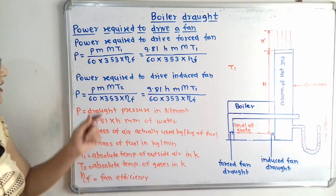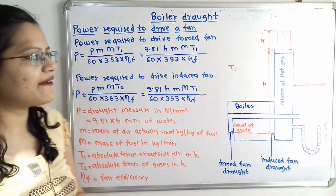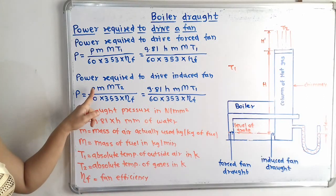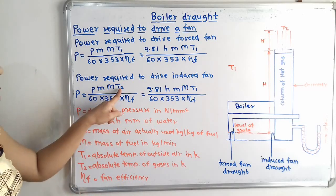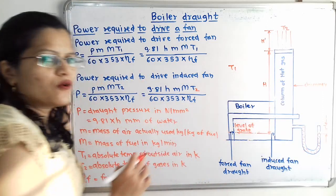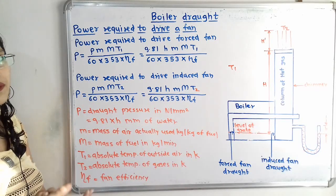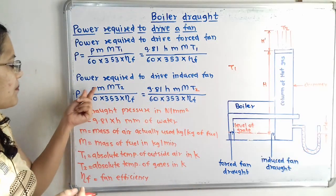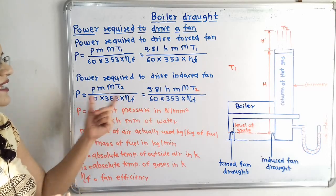For the power required to drive an induced draft fan: this fan draws flue gases at temperature T2. The formula is P = p × m × M × T2 / (60 × 353 × η_f). T2 is the absolute temperature of the flue gases in Kelvin. If pressure is in mm of water, replace p with 9.81 × h. Either formula can be used as per the given data.